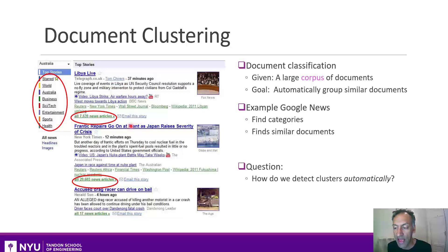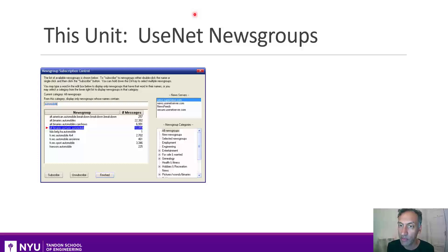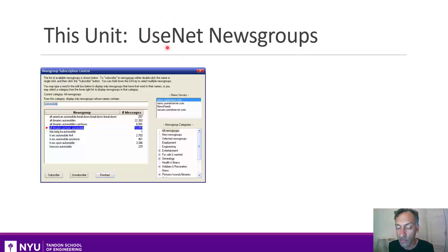The question is: how did they do this? Or, given a corpus of documents, how could you detect clusters of these documents automatically? Today I'm not going to show you how to build a document clustering system on the full stream of news articles from around the world. Instead, I'll show you a pretty interesting example on a smaller dataset that's often used in education, called the Usenet newsgroups.